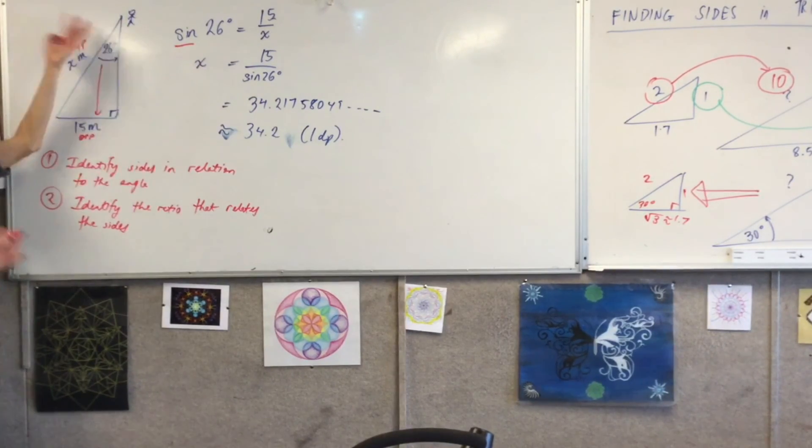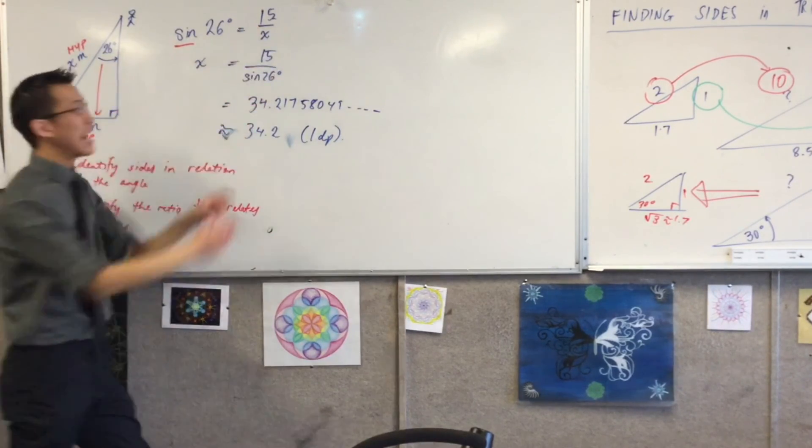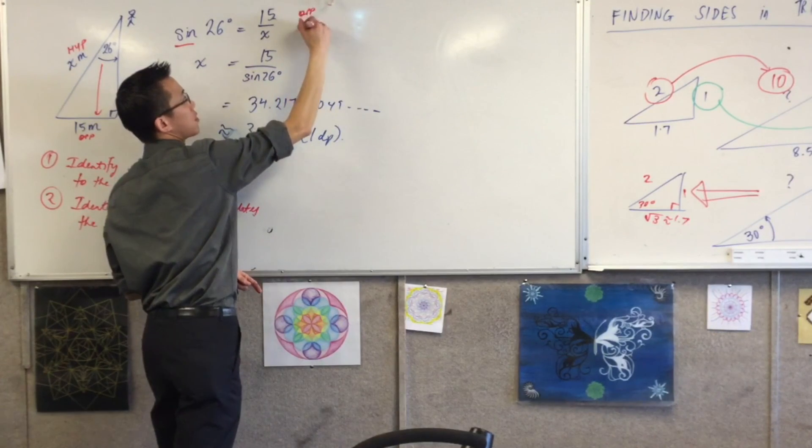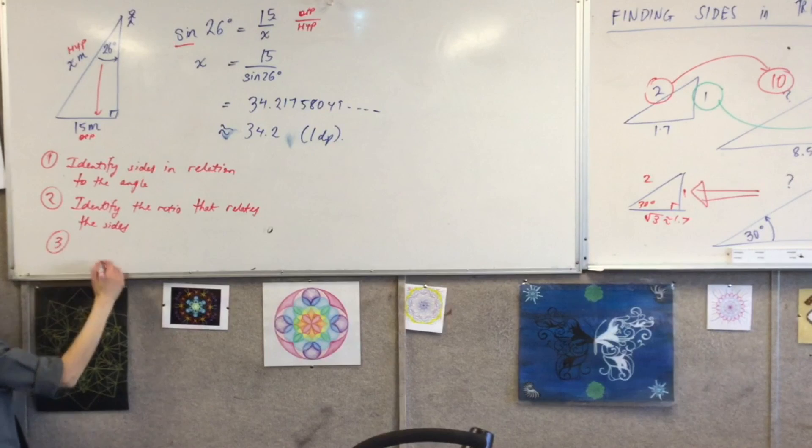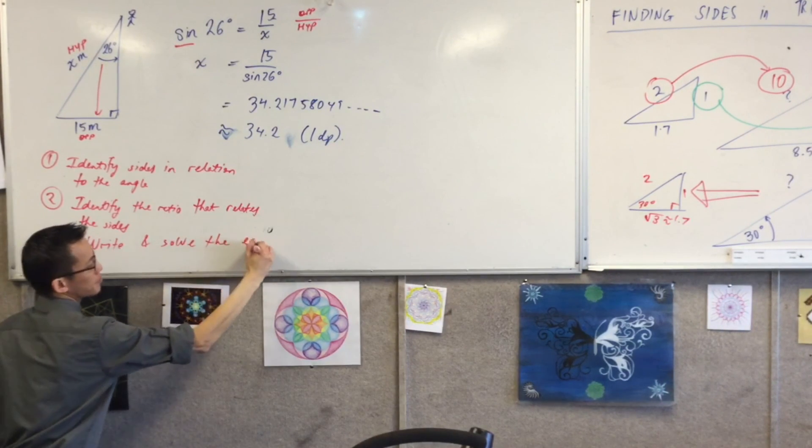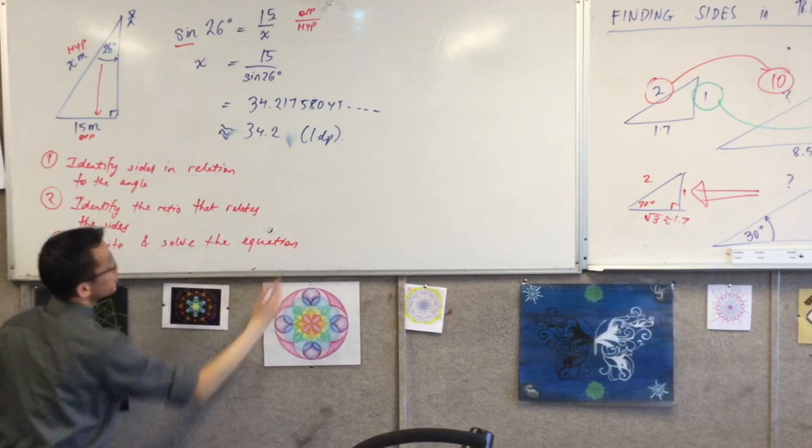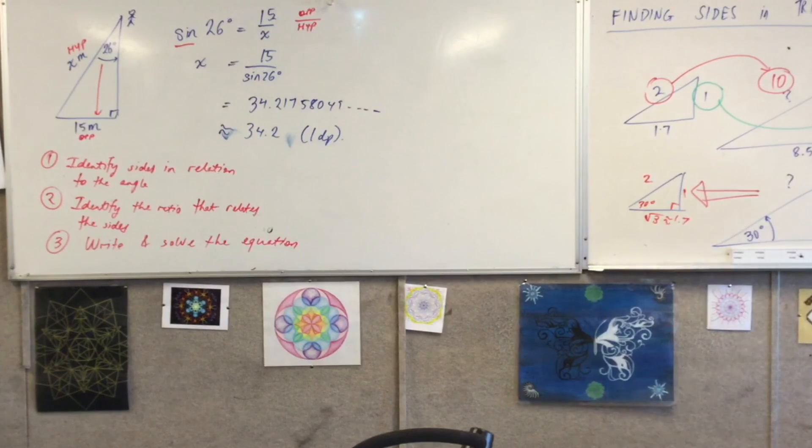Okay, so then I said sine, and then from there I was just filling in the details that were in the question, right? 26 degrees is the angle, 15 over x has to be in that order because it's opposite on hypotenuse after all, okay? So step three is to write and then solve the equation, and you can see we had to do some algebra, we had to move things around so I got the x exactly where I wanted, and your calculator took care of the rest, okay?